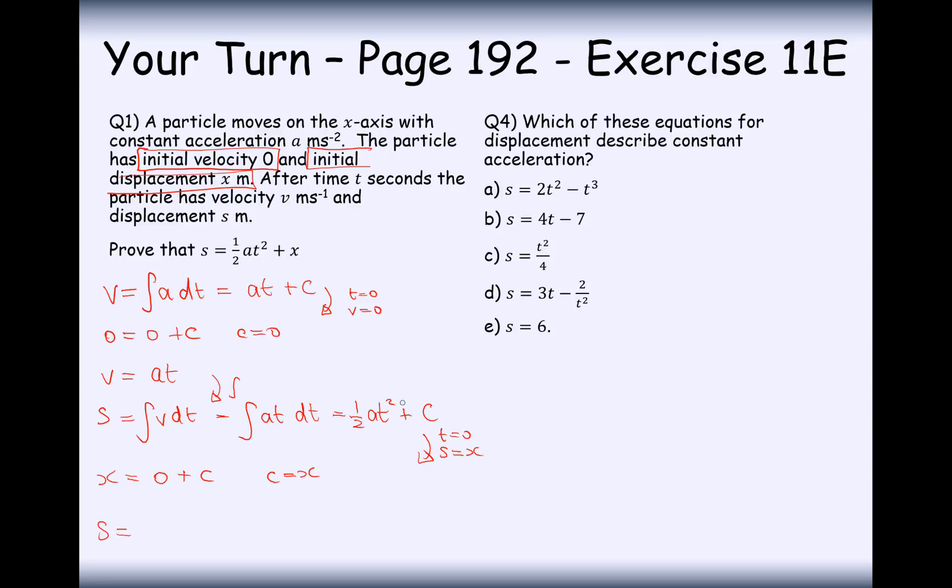So here, when T equals 0, displacement is X meters. So it's X equals 0 plus C. So C is therefore equal to X. So therefore, S is equal to this formula here, but C is equal to X, so it's half A T squared plus X, and that's what they're looking for us to prove. Now this all happened here because acceleration was constant. It's just some letter, it's just some number. So the A here is just representing a number, so it's just A times T when you integrate.